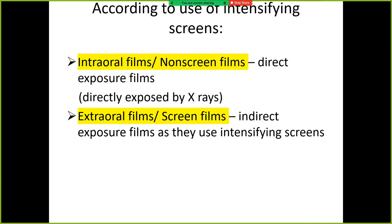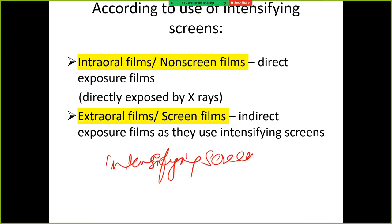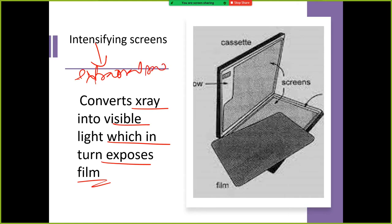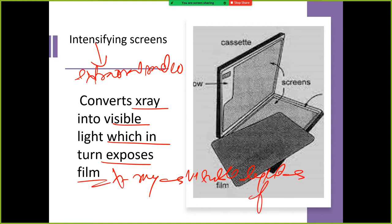Now, according to the use of intensifying screens. What is an intensifying screen? An intensifying screen converts x-rays into visible light, which in turn exposes the film. Intensifying screens are used only in extraoral radiographs. So its function is to convert x-rays into visible light, which then exposes the film.